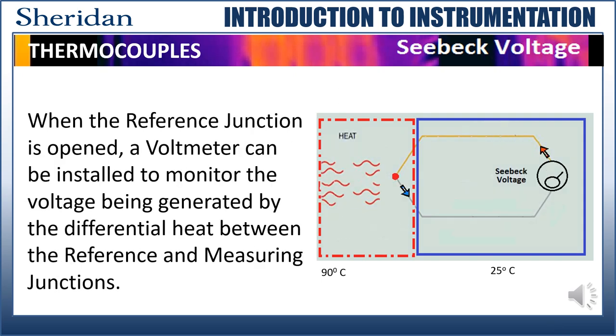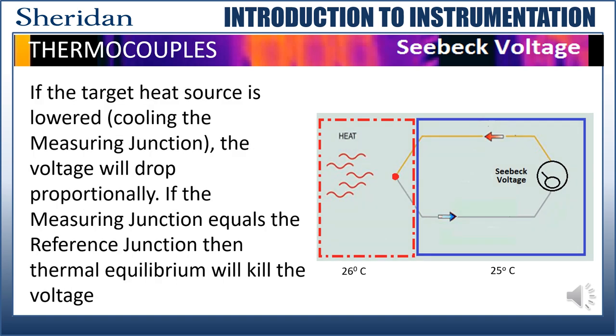When the reference junction is opened, a voltmeter can be installed to monitor the voltage being generated by the differential heat between the reference and measuring junctions. If the target heat is lowered, cooling the measuring junction, the voltage will drop proportionally. If the measuring junction equals the reference junction, then thermal equilibrium will kill the voltage.